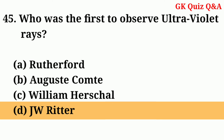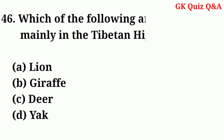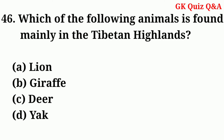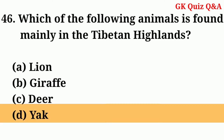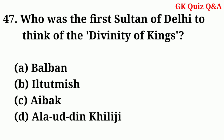Who was the first to observe ultraviolet rays? Answer: D — J.W. Ritter. Which of the following animals is found mainly in the Tibetan highlands? Answer: D — Yak.